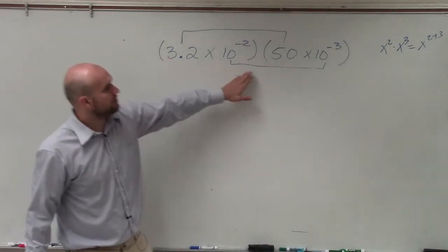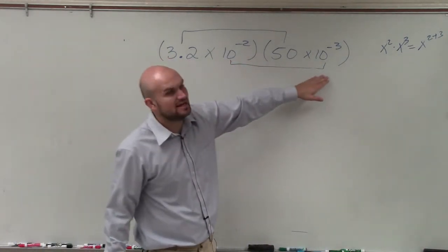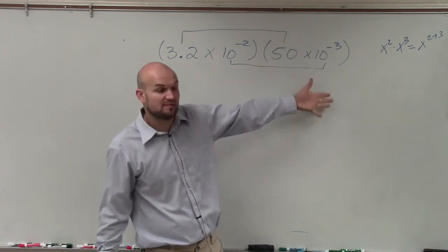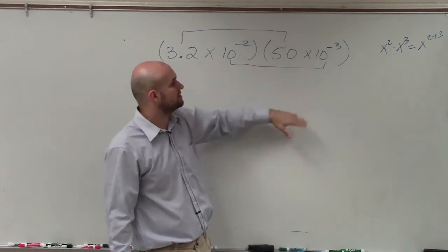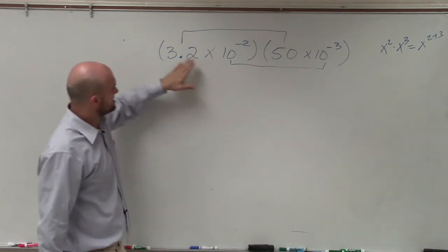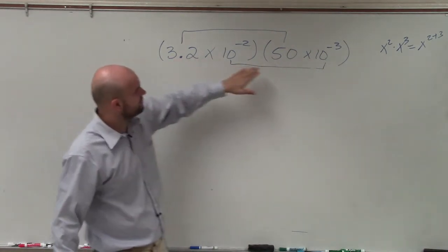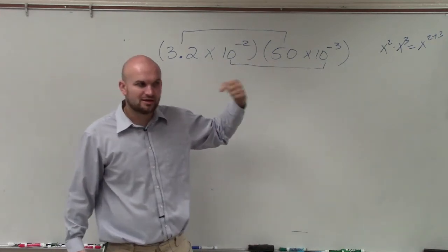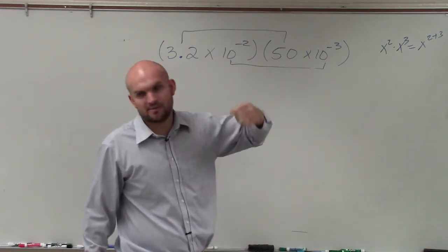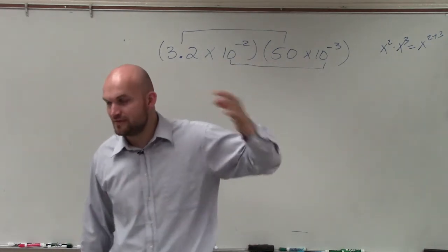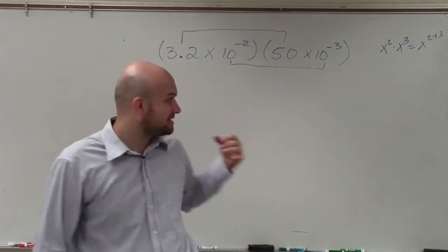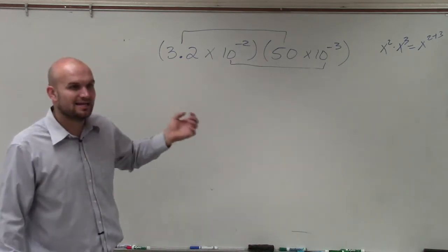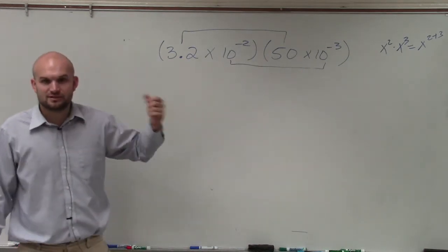So when we're multiplying 10 to the negative second and 10 to the negative third, we're going to be adding the exponents. Then I need to multiply 3.2 times 50. But there is a little thing I need to make sure: is 50 times 10 to the negative third power in scientific notation?